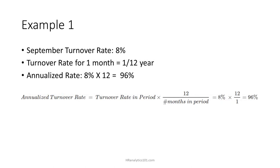As an example, suppose my turnover rate was 8% for the month of September. Because I am looking only at a single month, this period accounts for 1/12 of a year. To find my annualized turnover rate, I would therefore multiply 8% by 12, which is the inverse of 1/12. The result is 96%. That's pretty steep, but it makes sense — if I am losing 8% of my people every month, then I would lose 96% of my people over the course of 12 months at that same rate.